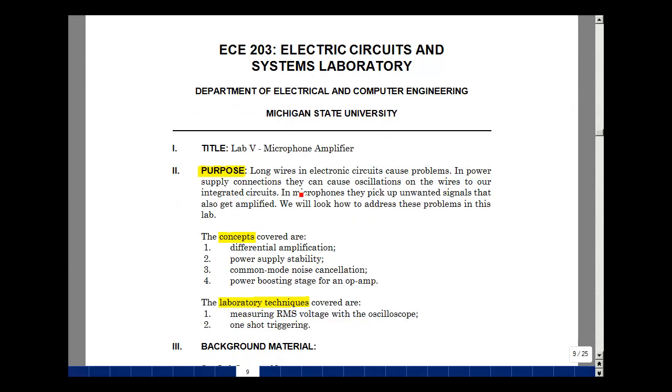In this lab we looked at problems with long wires in electronic circuits. In power supply connections they can cause oscillations on the wires of our integrated circuits. In microphone circuits they can pick up unwanted signals that get amplified. Some of the concepts that we covered were differential amplification, power supply stability, common mode noise cancellation and adding a power booster to our op-amp. The laboratory techniques that we're going to take a look at are measuring RMS voltage with an oscilloscope and the idea of what's called one-shot triggering. When you come to lab next time there'll be a quiz on these background notes, the video itself and the lab procedure and this is lab 5 microphone amplifier.